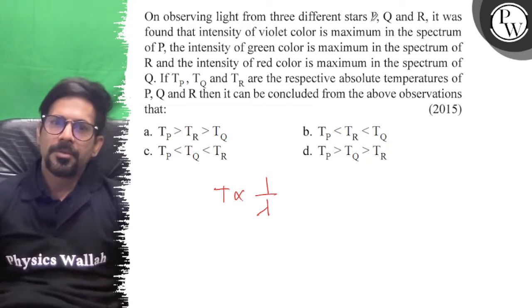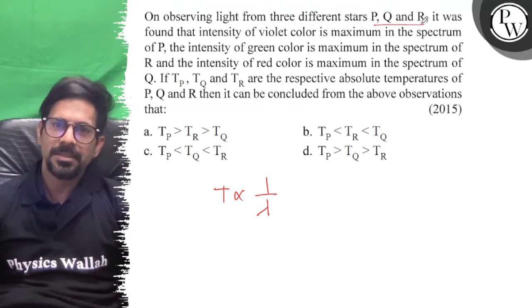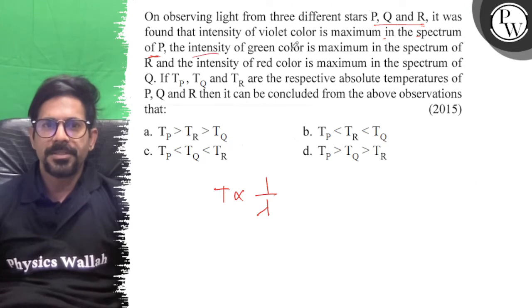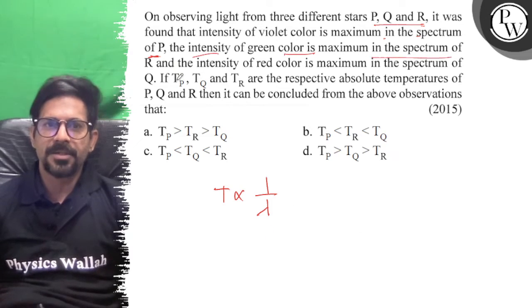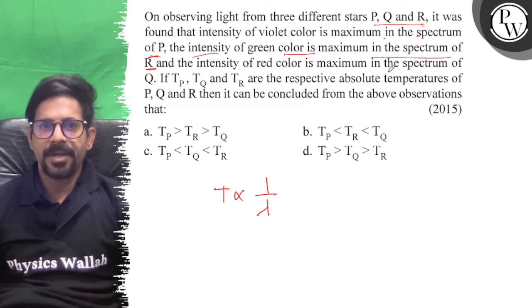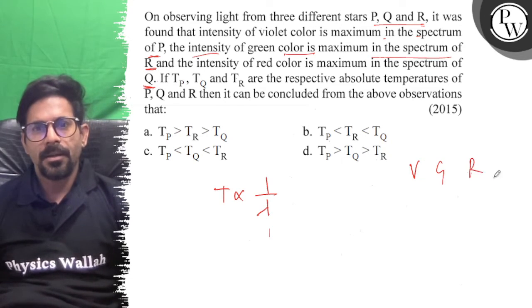Okay, so here we have three stars P, Q, R. It was found that intensity of violet color is maximum in the spectrum of P, the intensity of green color is maximum in the spectrum of R, and the intensity of red color is maximum for Q. So we have violet, green, and red.